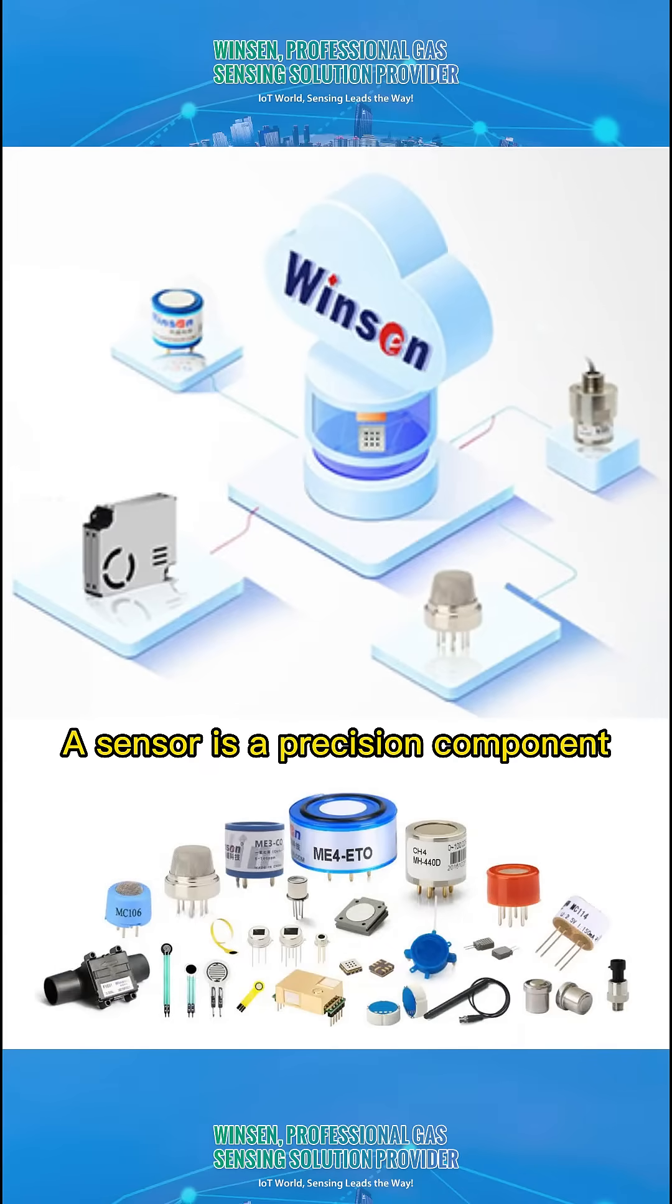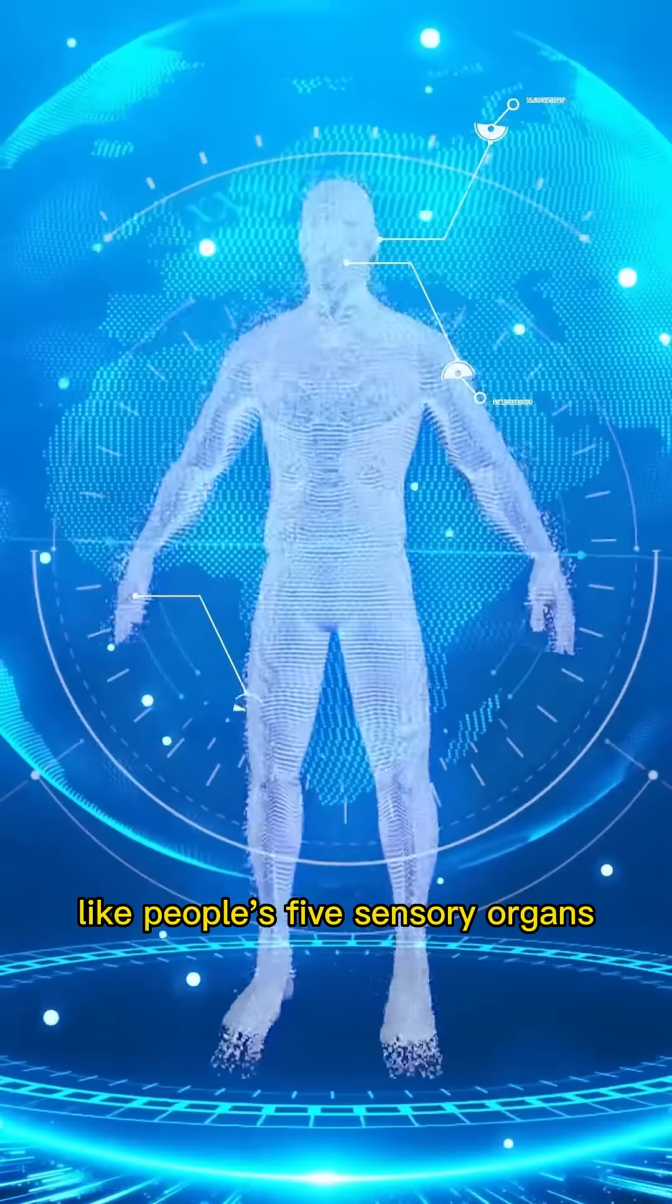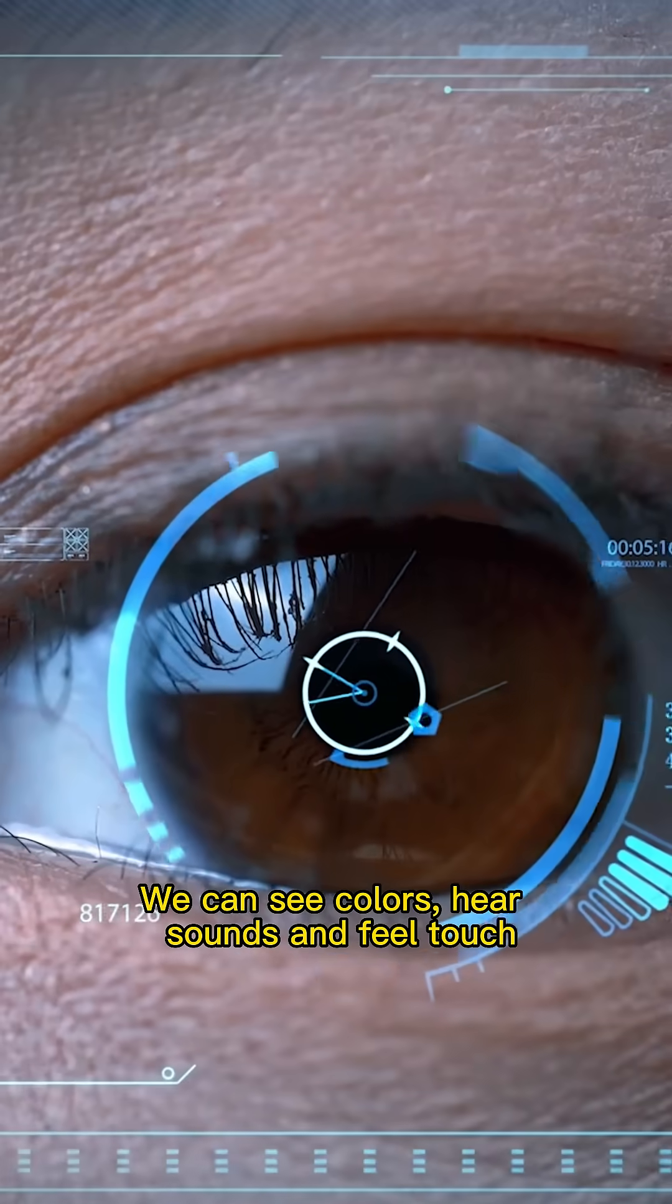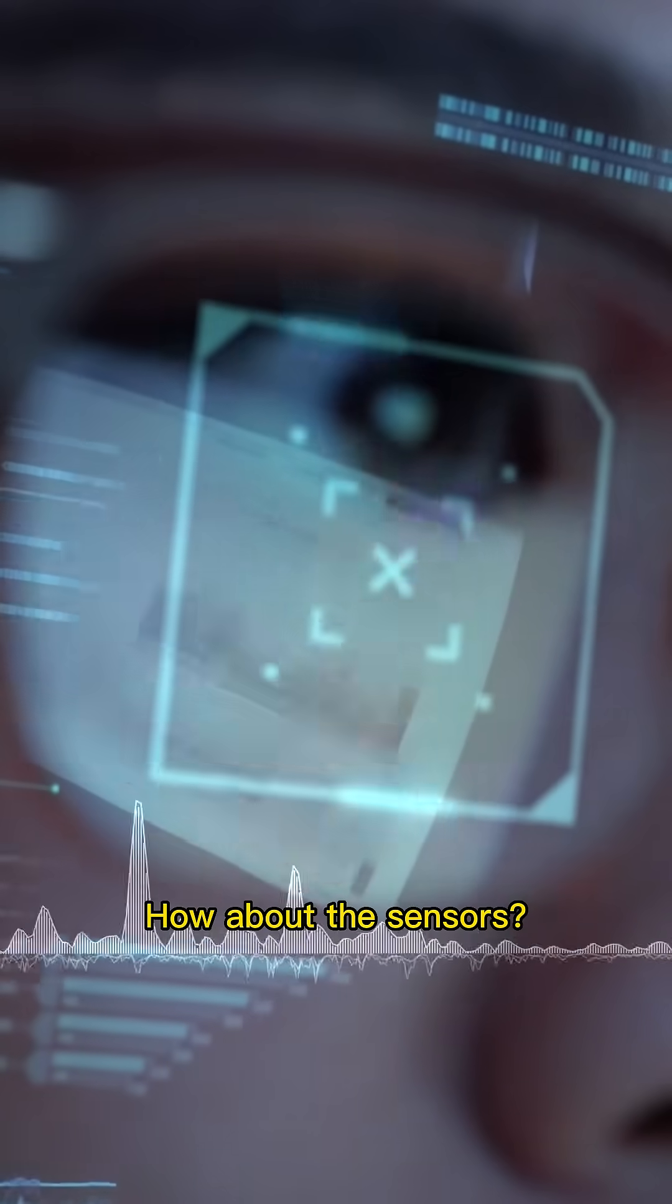What is a sensor? A sensor is a precision component that responds to input signals like people's five sensory organs. We can see colors, hear sounds, and feel touch. How about the sensors?